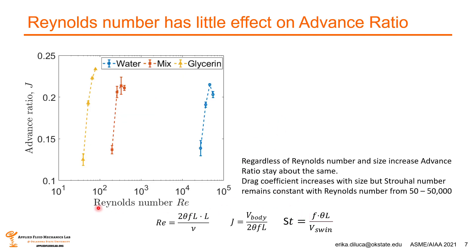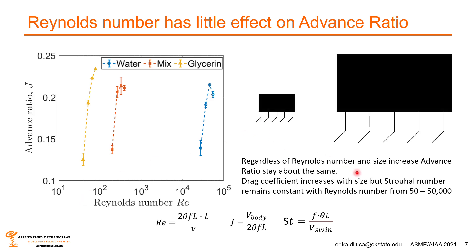We also looked at the effects of changing Reynolds number on advance ratio, which is body speed with respect to limb speed. We found that Reynolds number has little effect on advance ratio — a lower advance ratio means the legs must move faster to achieve the same body speed compared to a higher advance ratio. Regardless of Reynolds number and size, advance ratio stays approximately the same across the board.